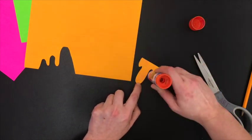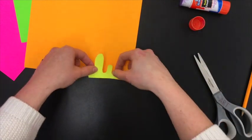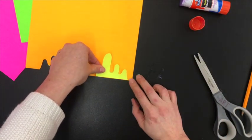Glue on the back of the piece you just cut out and line up the straight line with a straight line on the paper. Smooth it out.